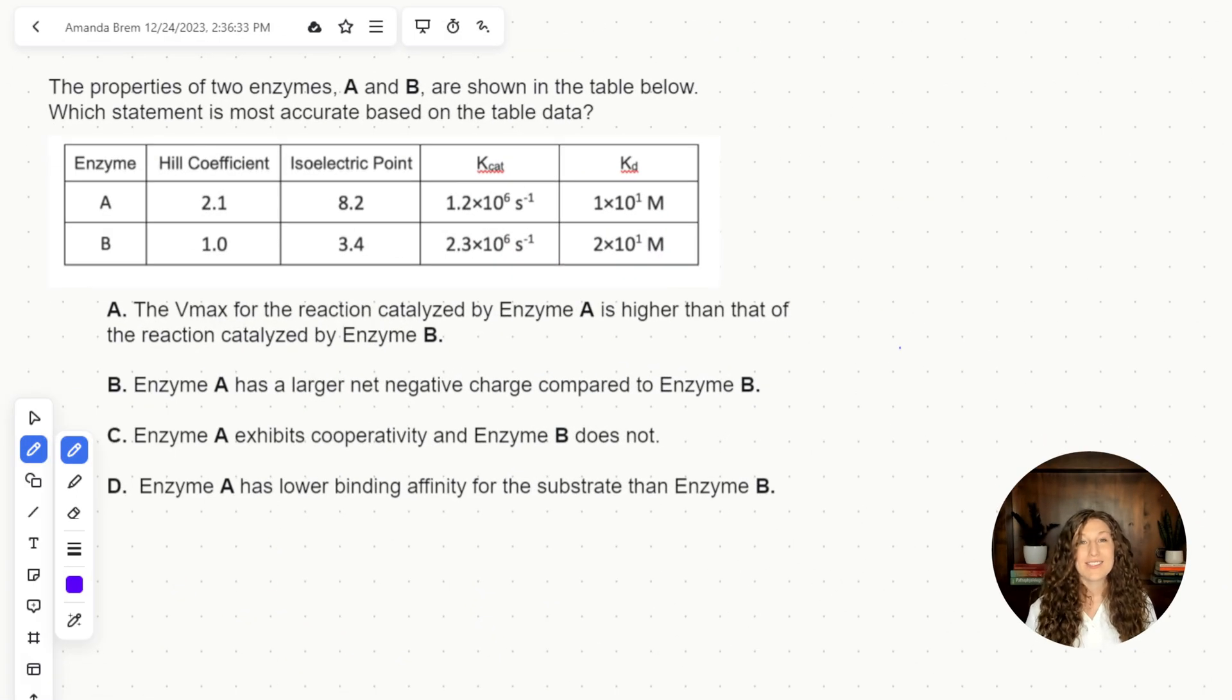This question is showing us two enzymes and a lot of their properties. We've got hill coefficient, isoelectric point, Kcat, and KD. So there's two ways to approach a question like this. Either you can interpret the table first and kind of get some information, for example, what do I know about hill's coefficient and can I understand about those numbers? Or you can go through the answer choices and eliminate as you go based on the table. For me personally, I do like to look at the table a little bit first because if there's anything I can quickly eliminate from my answer choices as I'm going through it, I want to do so.